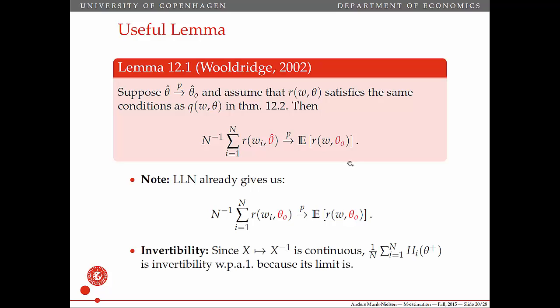Why does this give us invertibility? Because the operation of inverting a matrix is a continuous operation. So if the limit of the matrix we care about is invertible, then with probability approaching one, this sequence at each step will also be invertible with probability approaching one. One of the things we assume in this theorem is that this limit is in fact invertible — in other words, that the expected Hessian is invertible. When the expected Hessian is invertible, then this average Hessian evaluated at theta plus, wedged between theta naught and theta hat, also becomes invertible.